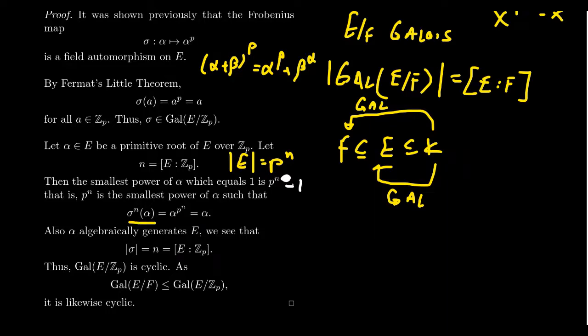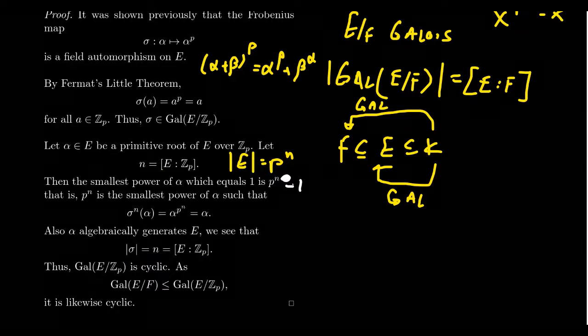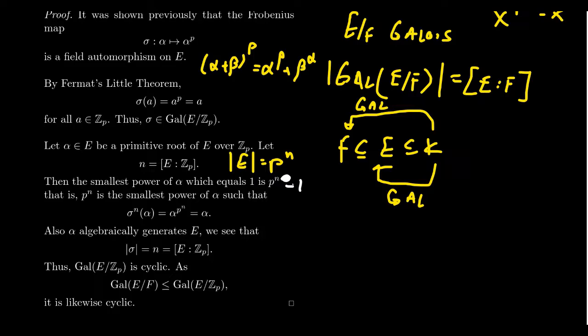But alpha to the P to the N, that is just sigma to the nth power of alpha. So if you apply sigma N times to alpha, you're going to produce back this. And so alpha is fixed by sigma to the N. As every element in E is algebraically generated by alpha, this actually tells us that sigma to the N is the identity map. Because alpha is fixed, everything is fixed. So if we think of the order of this automorphism sigma, it's going to be N. But N was the degree of this extension E over Z_P. This tells us that the Galois group E over Z_P has order N because of this identity. We then produced an element which has order N, so this group has to be cyclic.